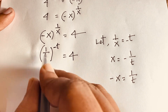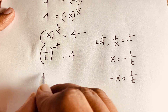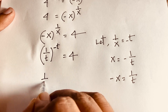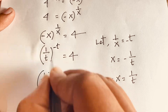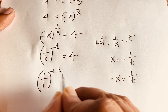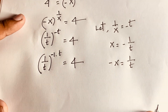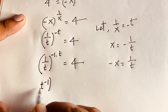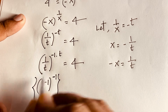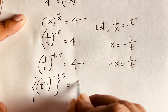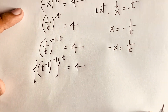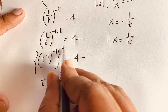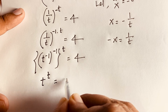Now, 1 over t can be written as t to the power minus 1 by the exponential law. So we have t to the power minus 1, and the exponent is minus 1 times t, which gives t to the power minus t. Negative 1 times negative t becomes positive, so t to the power t is equal to 4.